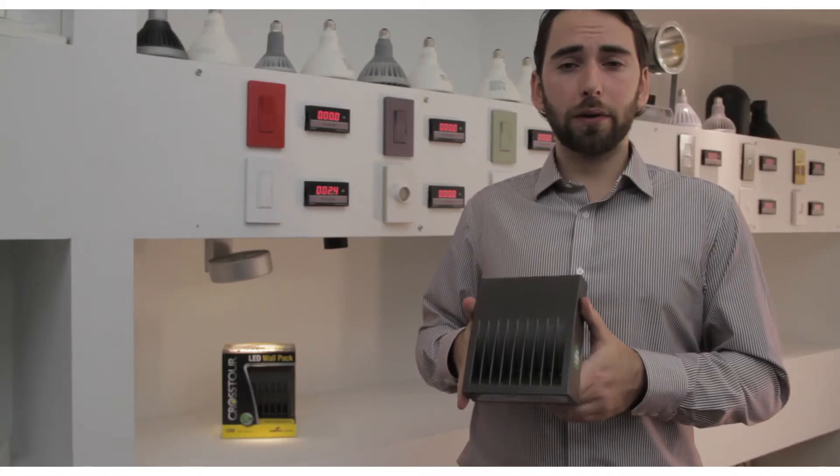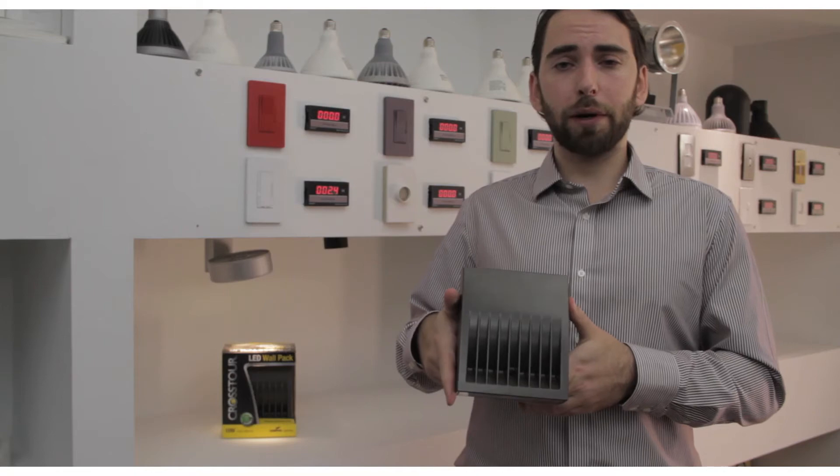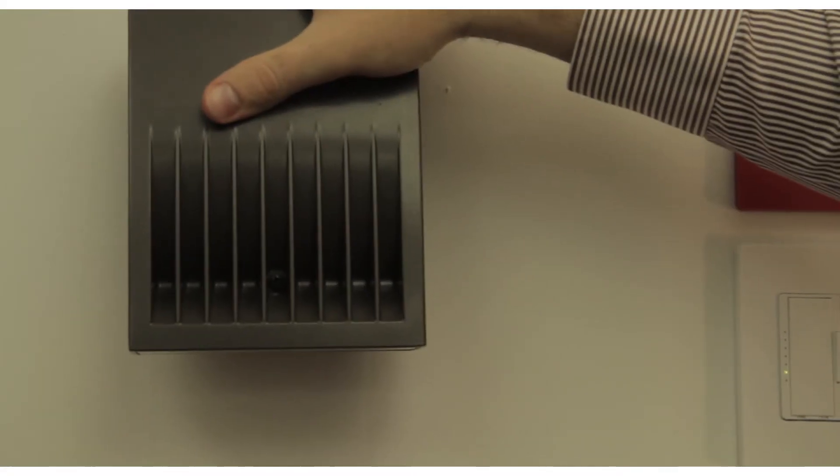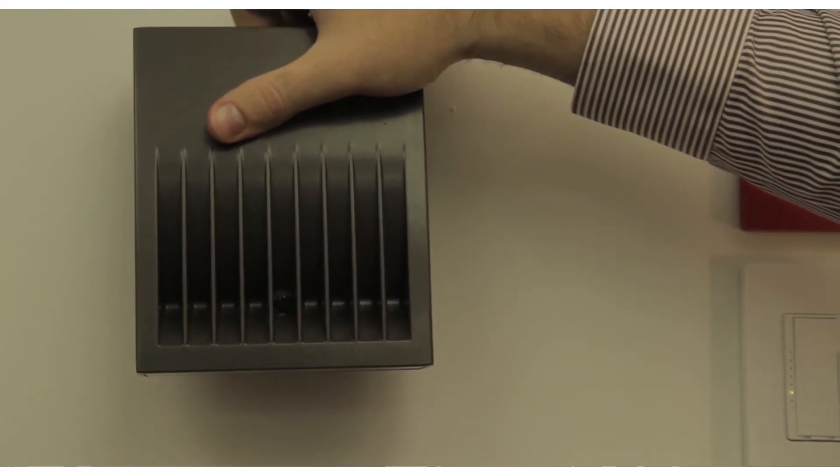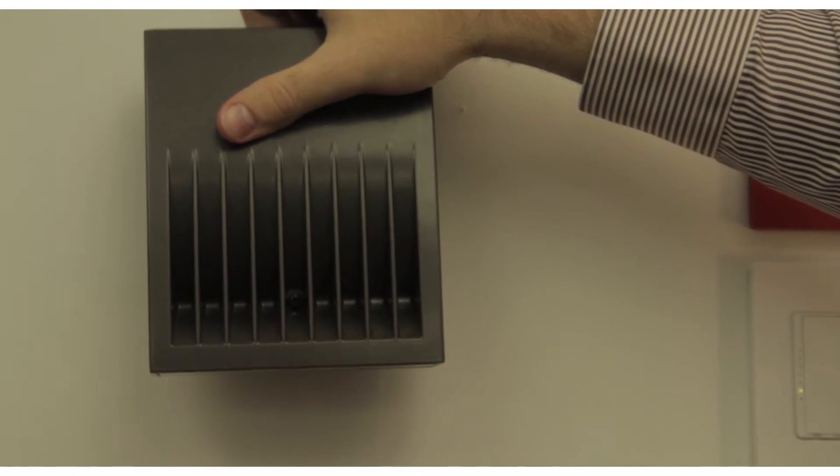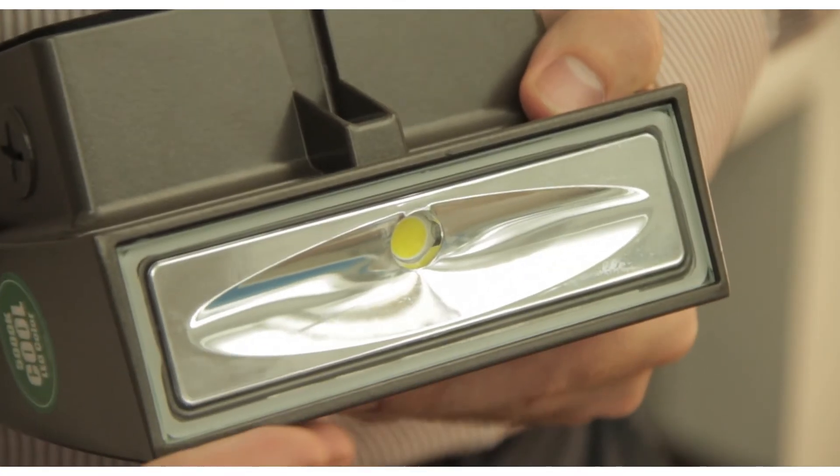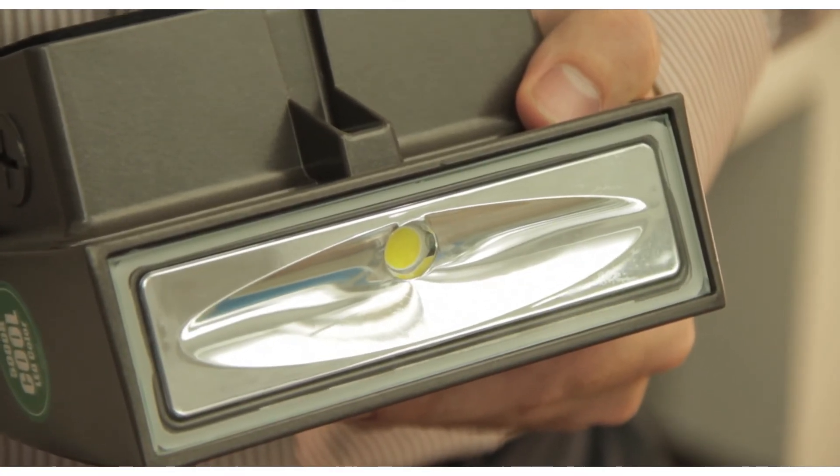The Crosstour is great for wall applications where its superior optics will give it better spacing than the competition. It can also be used in a bollard mount, over doors, and due to the sealed lens, it can also be mounted inverted as an uplight.